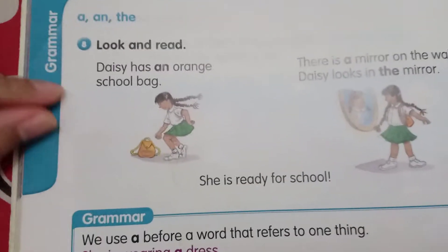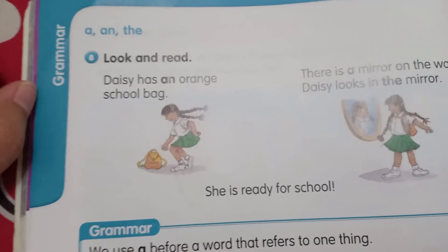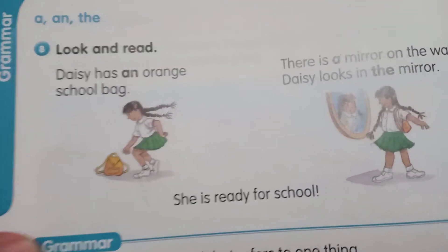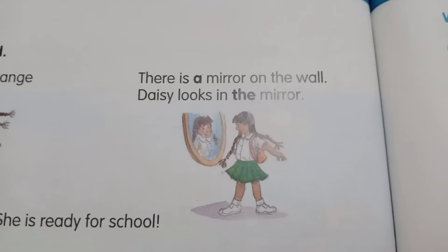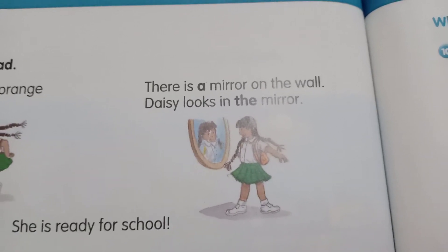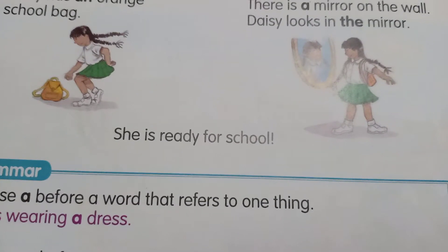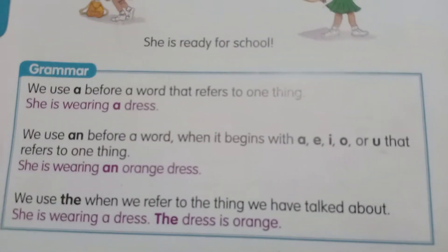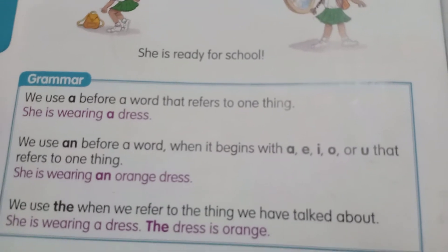Part A: Daisy has an orange schoolbag. There is a mirror on the wall. Daisy looks in the mirror. She is ready for school now. Look at the grammar.